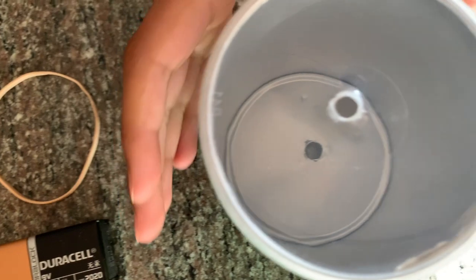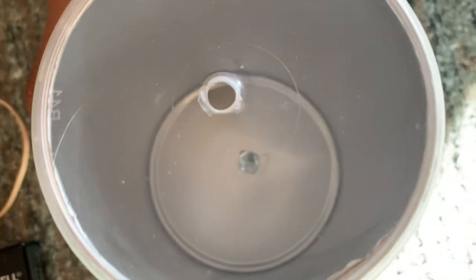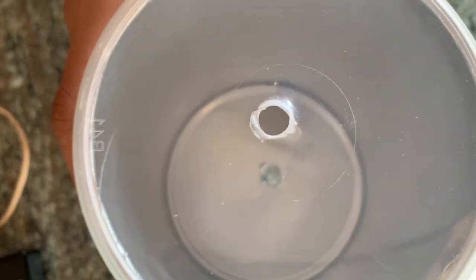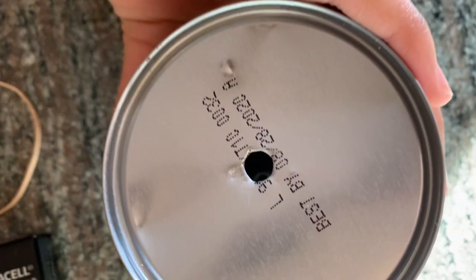I use a Pringles can but a larger can would actually work better for this experiment. But if you have a similar size one that's fine. And then poke a hole with a screwdriver on both sides of the can. Ask a parent to do this for you, it's a bit dangerous.